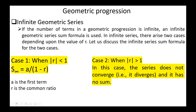If the number of terms in a geometric progression is infinite, the infinite geometric series sum formula is used. There are two cases depending on the value of r. Case one: if |r| < 1, the sum equals a/(1 − r). Case two: if |r| > 1, the series does not converge and has no sum.